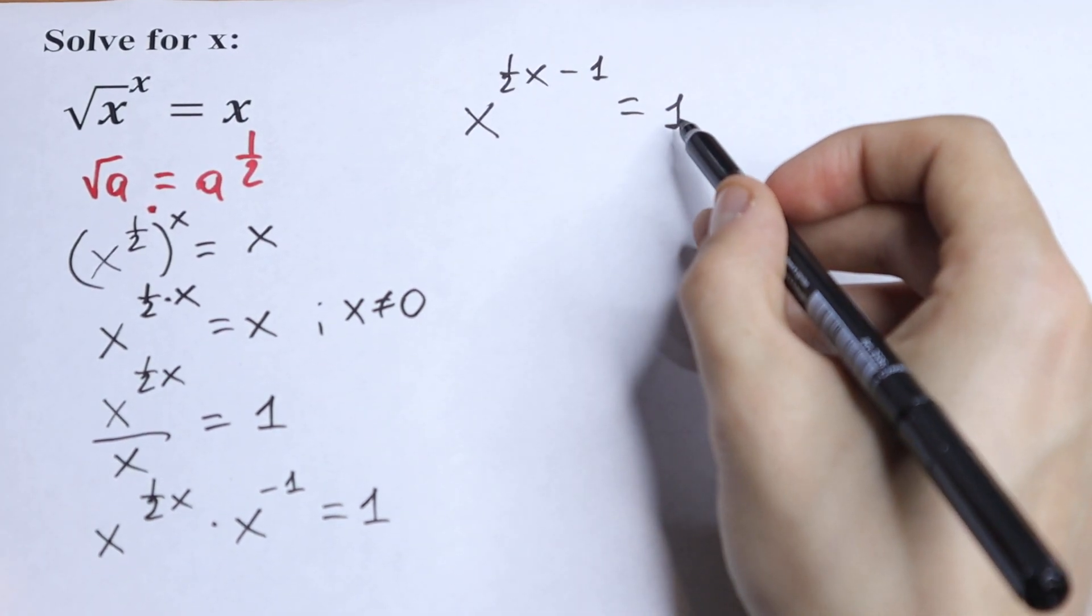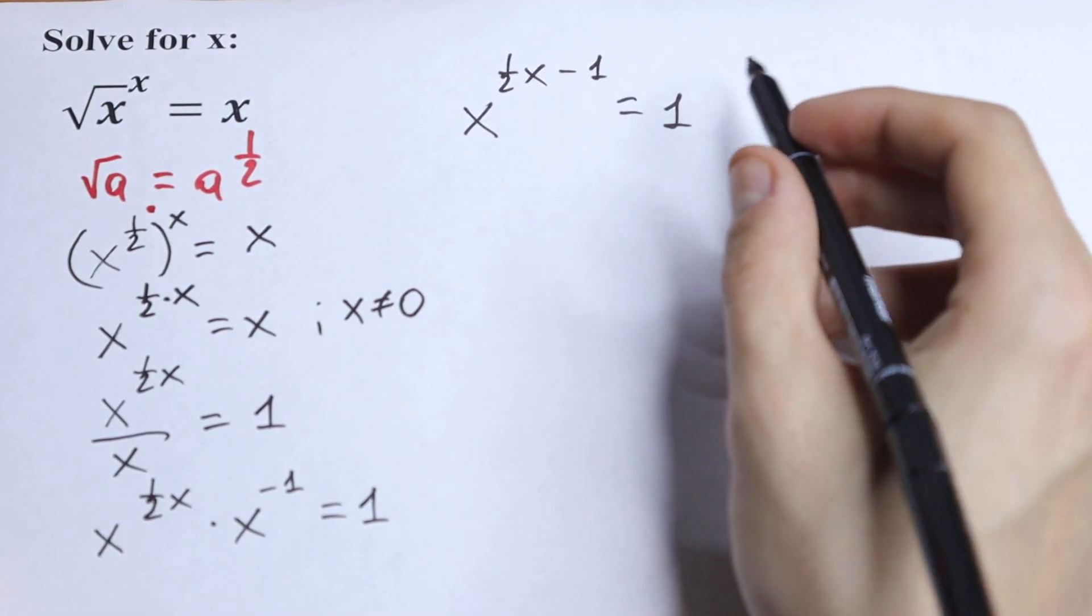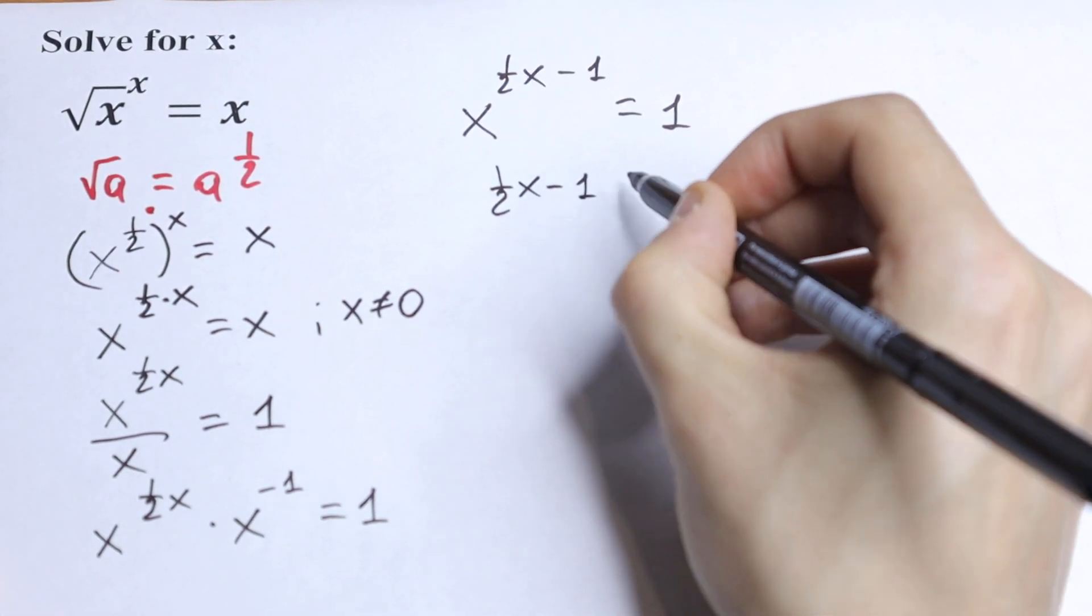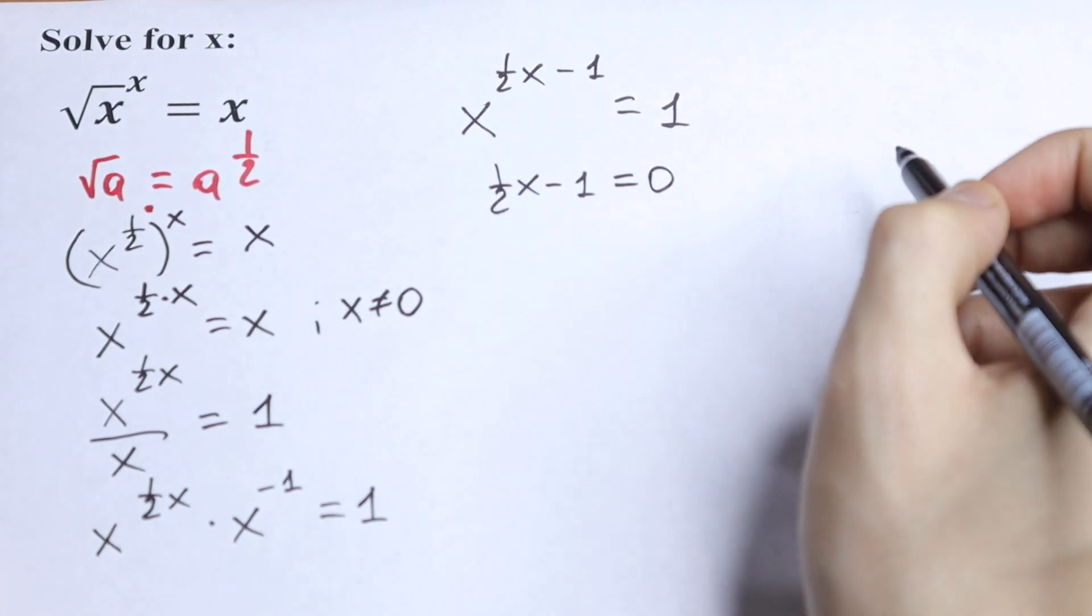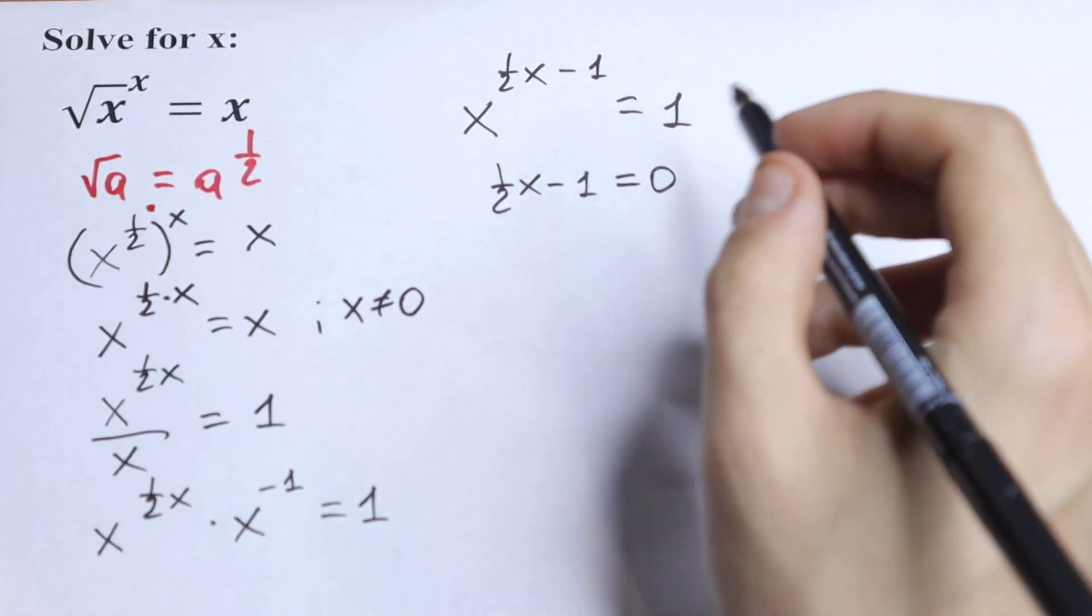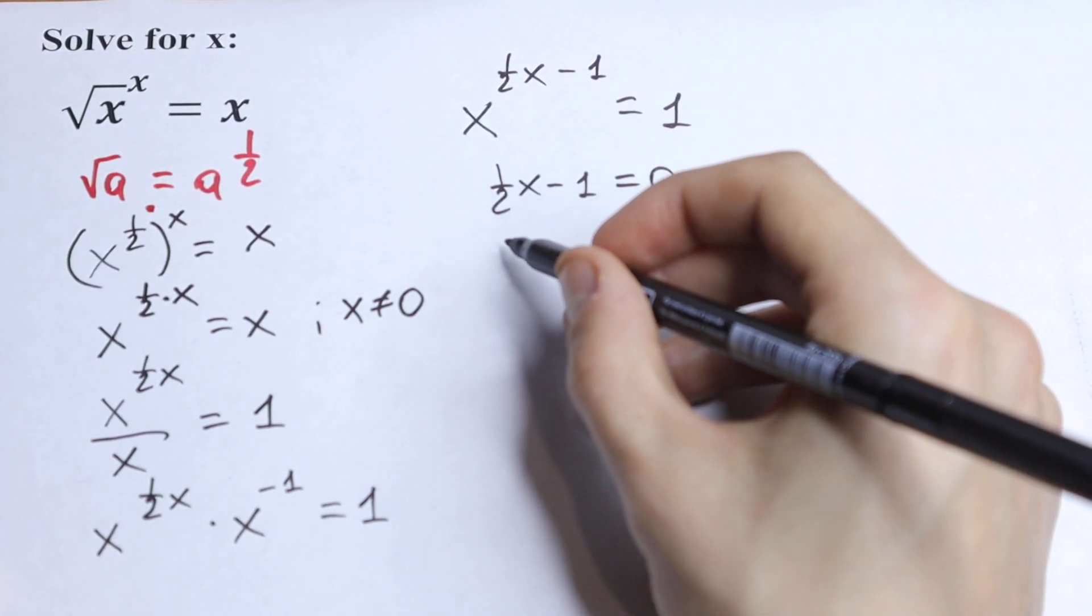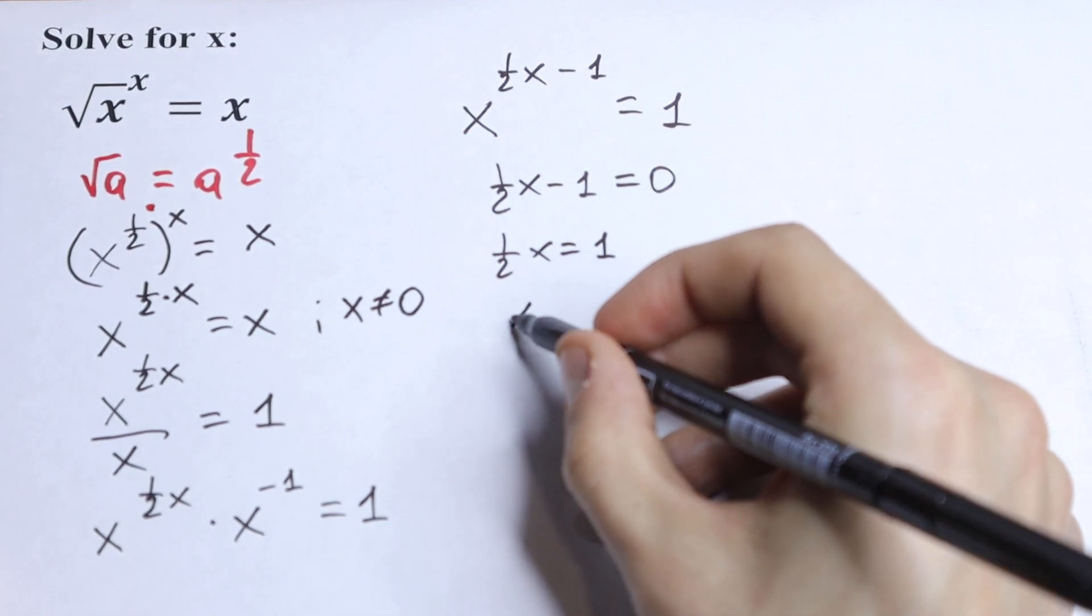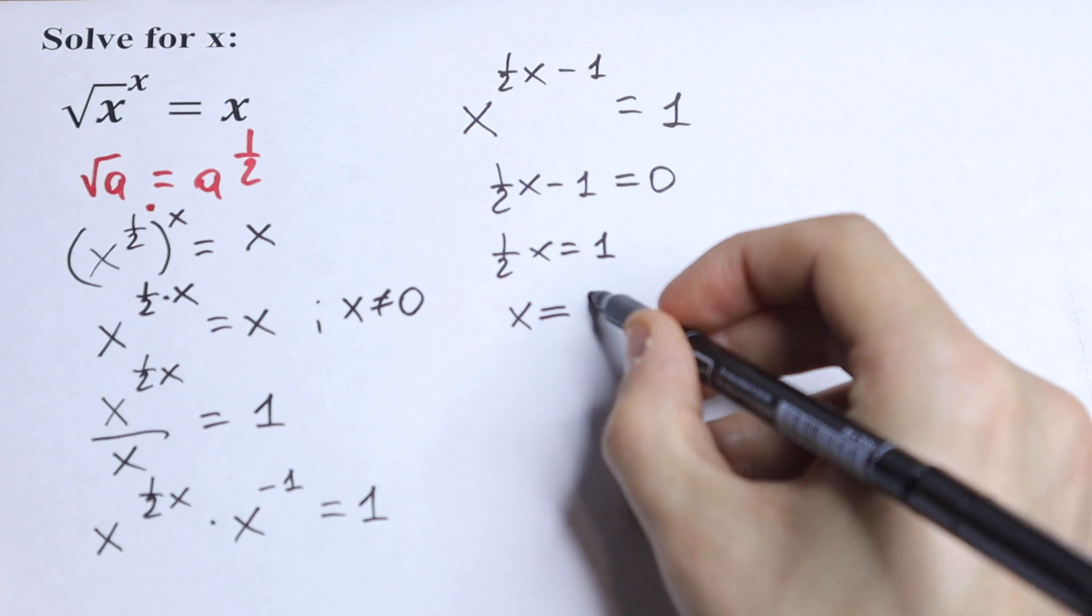This one can be written as the final equation: (1/2)x - 1 equal to 0, which is really good. We can simplify this a little bit: (1/2)x equal to 1, and of course our x equal to 2.